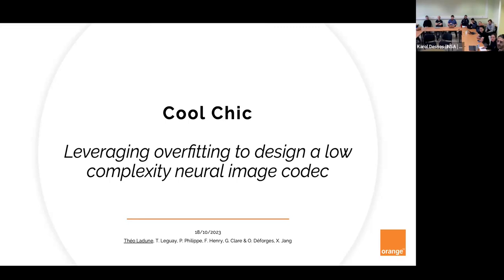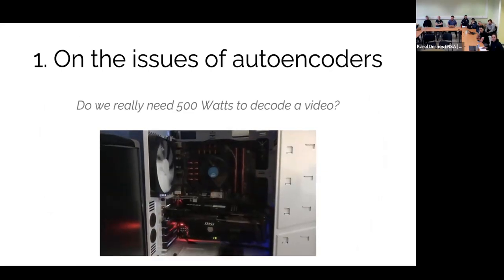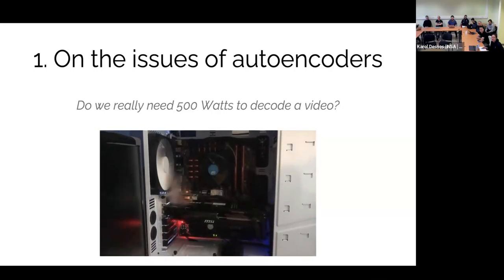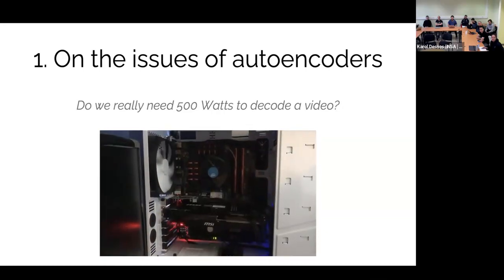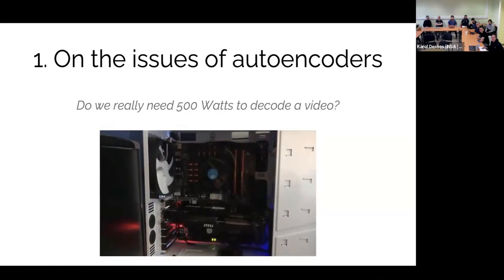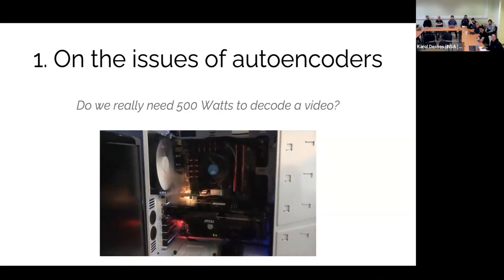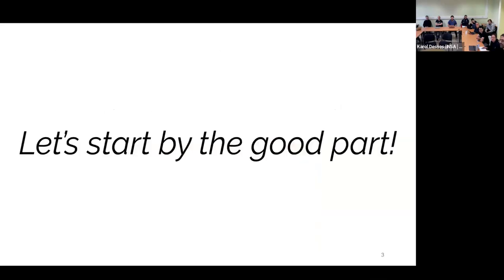So my talk is about learned image coding and it will be divided in two parts. The first part will be about autoencoders, where we see the pros and many cons of autoencoders. And the second part will be about Coolchic, which is a lightweight codec that we have developed as an alternative to autoencoders. So in a bit of a spoiler-ish way, I suspect all that, do we really need to film 500 watts to decode a video? Because that's one of the issues of the autoencoders.